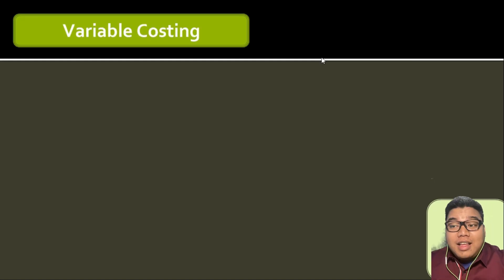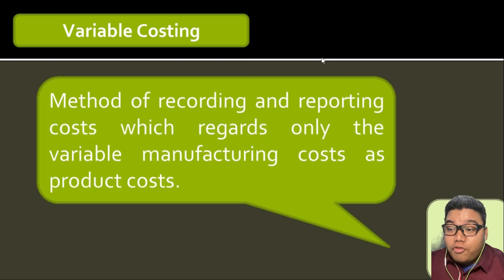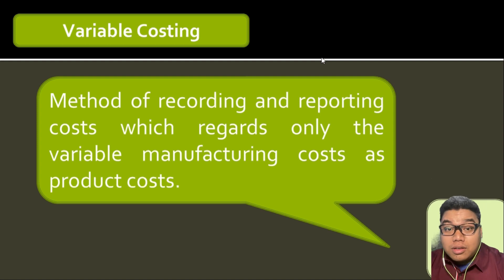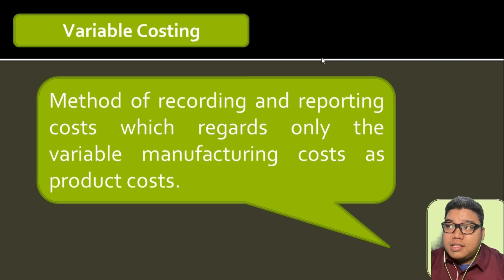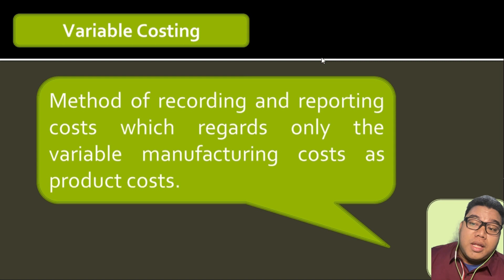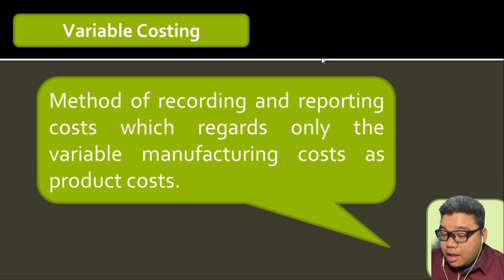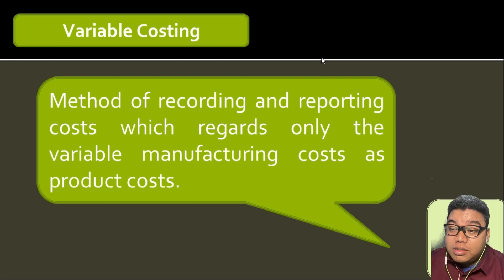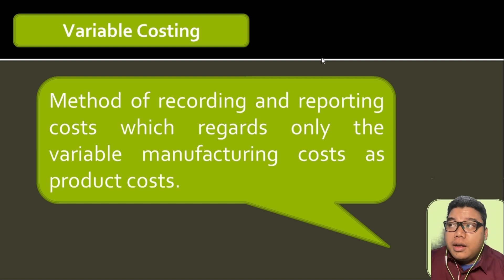What is variable costing? Variable costing is the method of presentation of costs in the income statement wherein variable manufacturing costs are the only ones regarded as product costs. That is the main difference. Later on we will find out the advantages and disadvantages of using this approach as a mode of presentation of costs in the income statement.